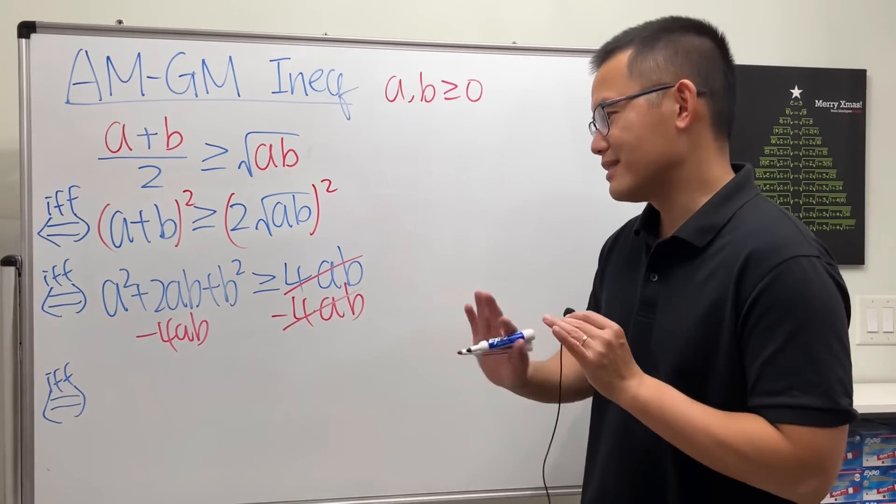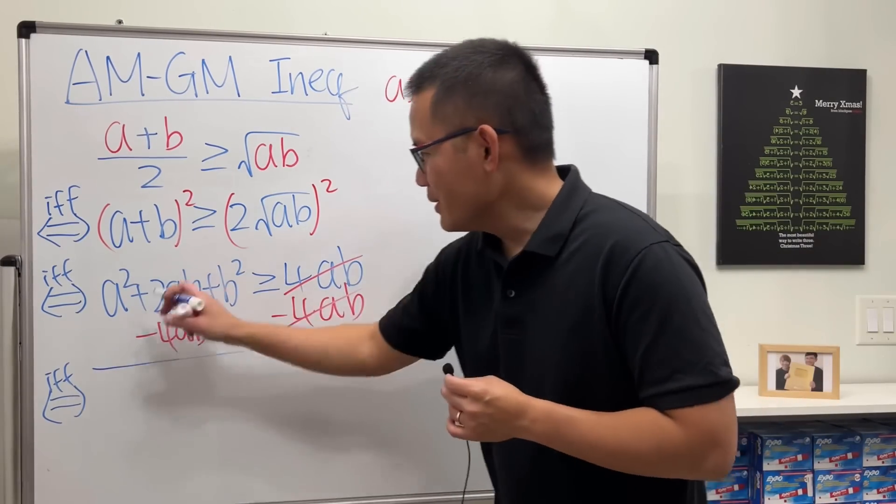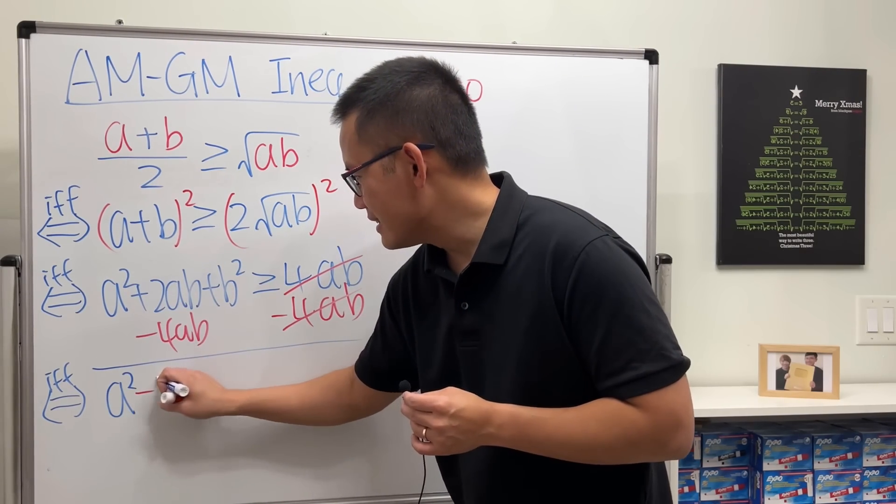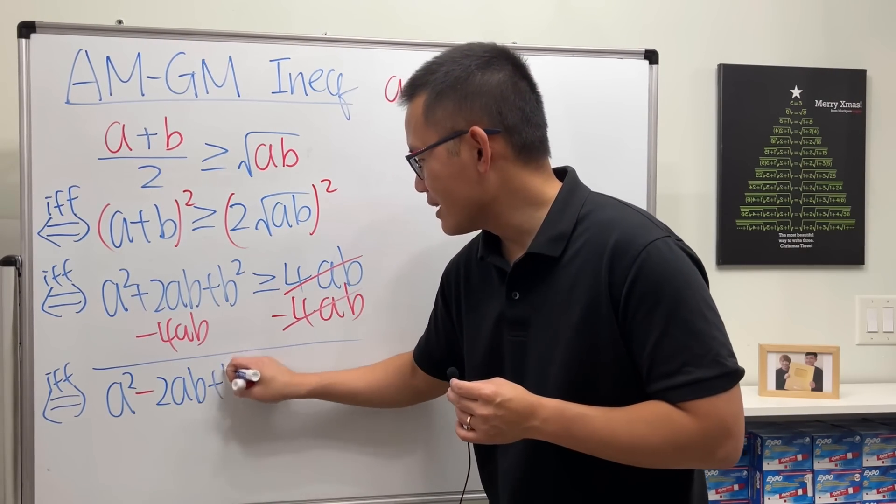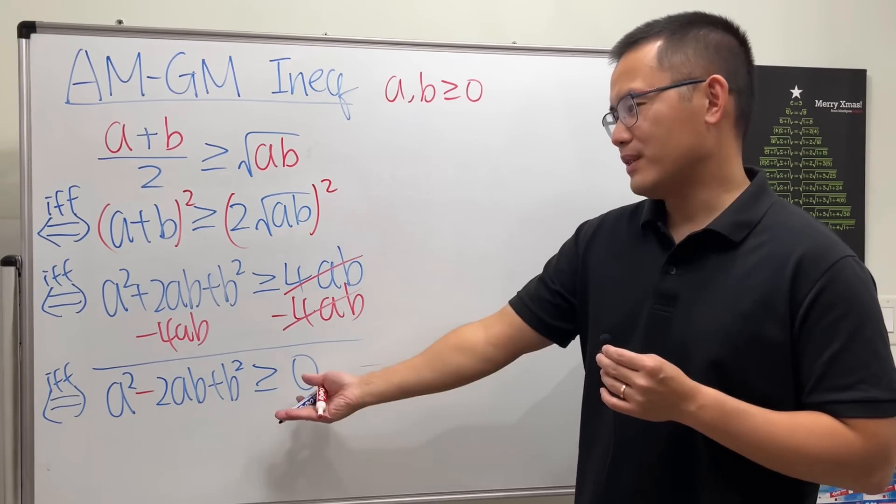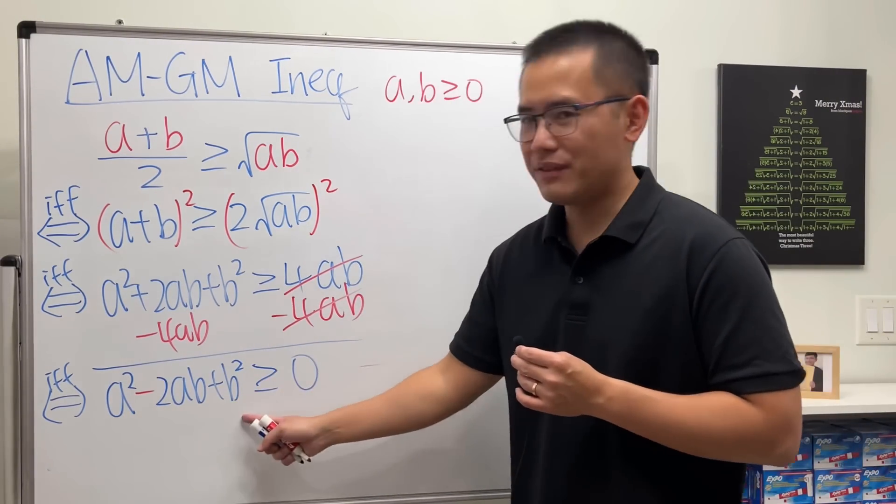We are going to get a squared, and that will be minus 2ab plus b squared, and that's greater than or equal to zero. And finally, I will just factor the left-hand side.